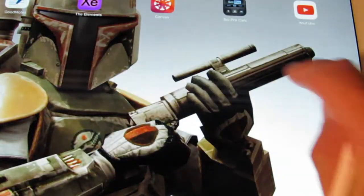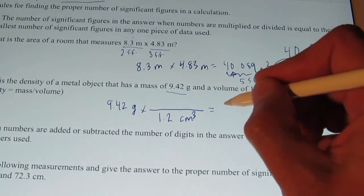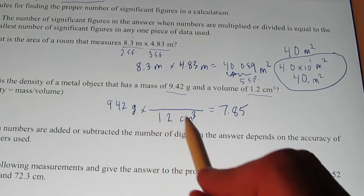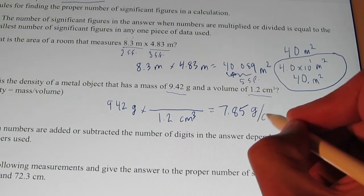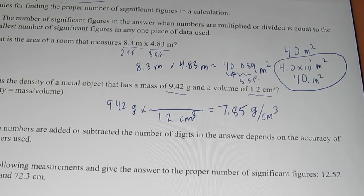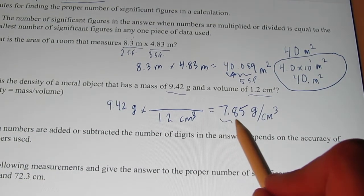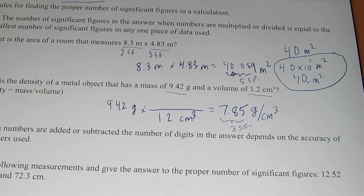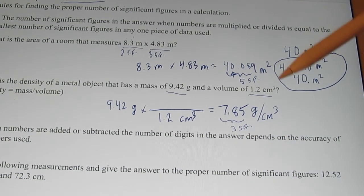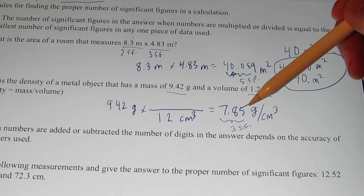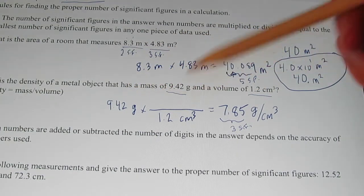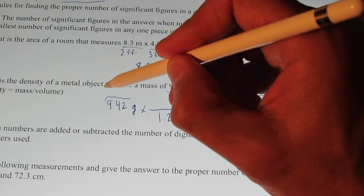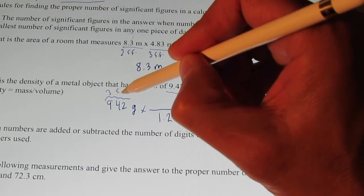So, we have 9.42 divided by 1.2 cubic centimeters. My calculator says 7.85. 7.85. So, 7.85. My unit would be grams over cubic centimeters. Grams over cubic centimeters. Now, this answer has three significant figures in it, doesn't it? Well, can I have three significant figures in this answer? Can my answer be more accurate than the data that I was given? Well, let's see. My first piece of data, 9.42, has three significant figures in it.